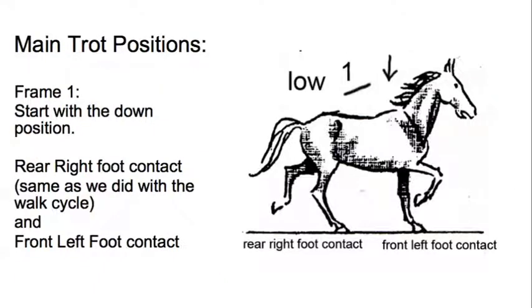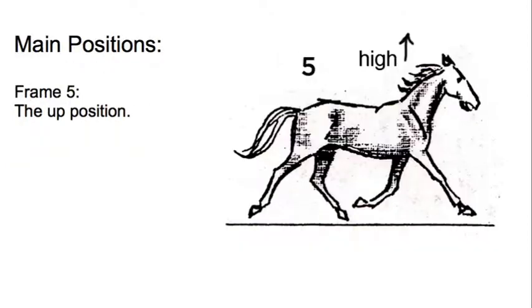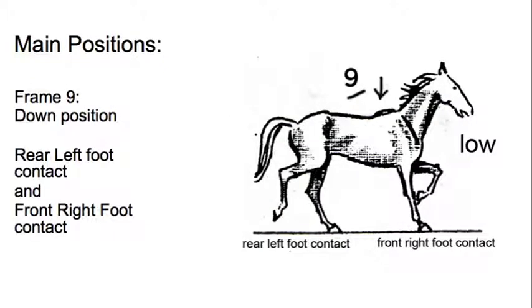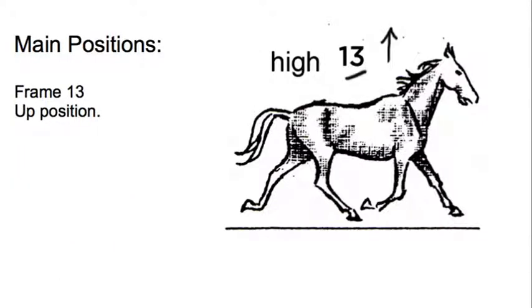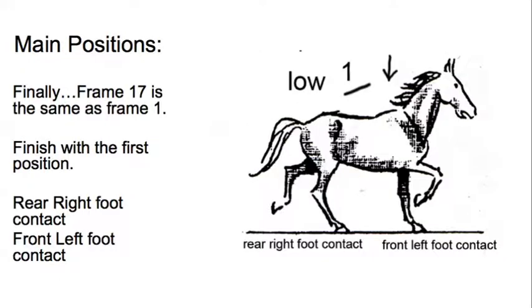So here are the main trot positions. Frame one, this is our rear right foot contact and front left foot contact. They happen at the same time, frame one. Then at frame five we're going up. Frame nine, we're going down again—rear left foot contact, front right foot contact. Frame 13, we're going up again. And then 17 is the same as frame one, and we finish with the first position, the rear right foot contact, the front left foot contact.